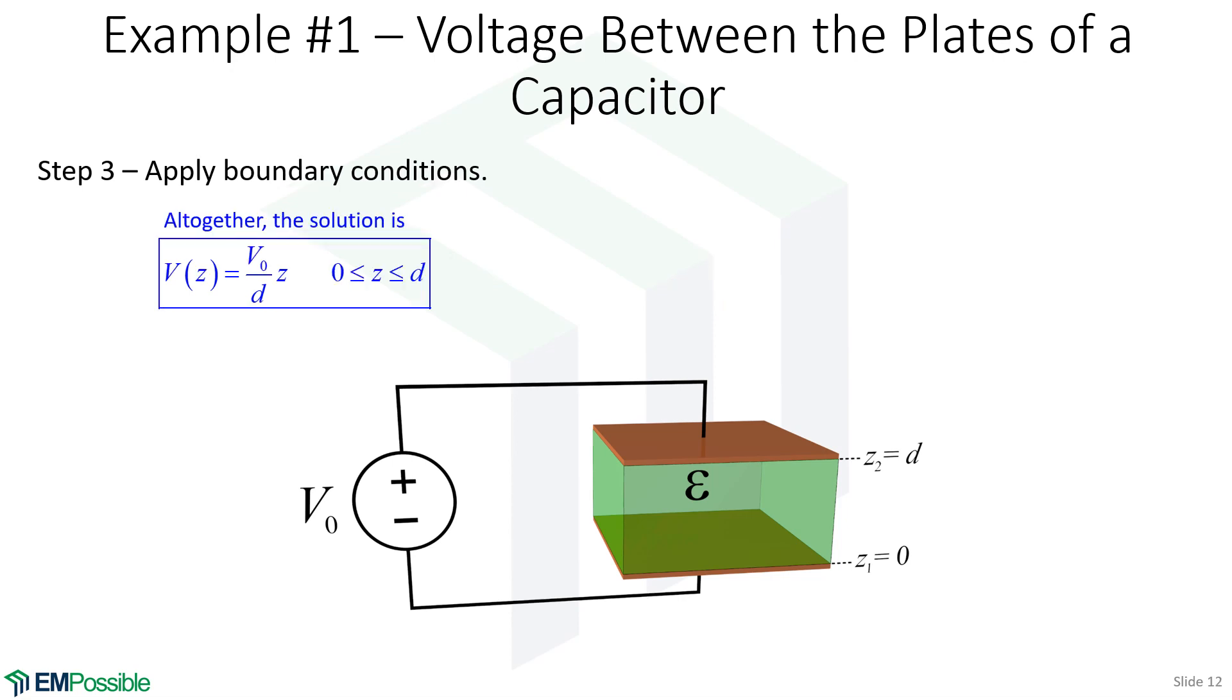So altogether, our electric potential as a function of Z is V naught over D times Z. And it's important to note this solution is only valid in the region from zero to D, just between the plates. It's not valid outside of the plates.